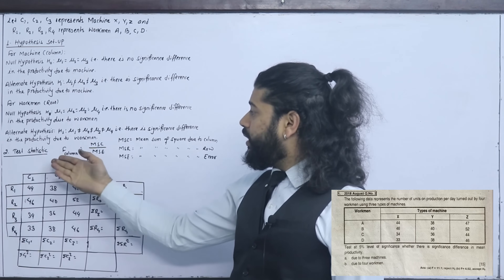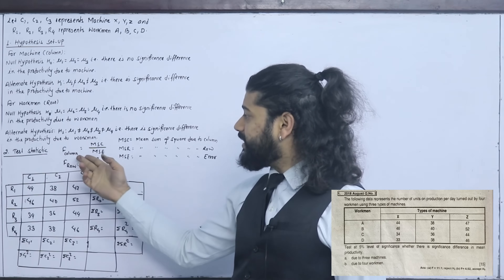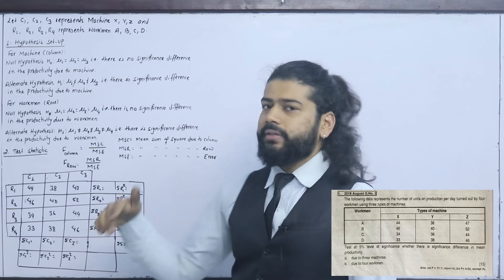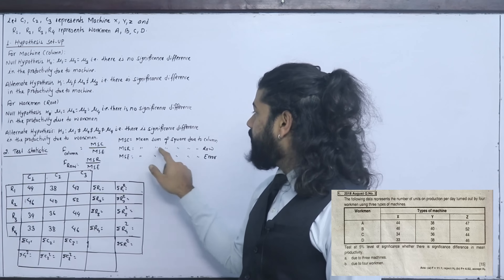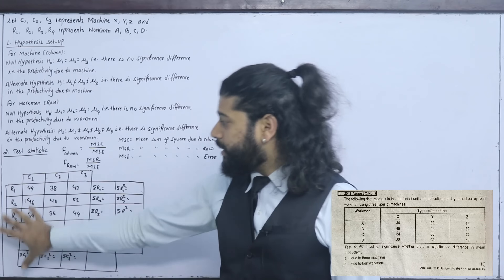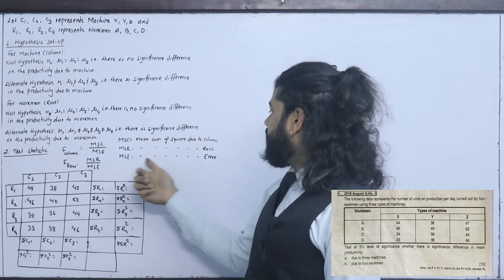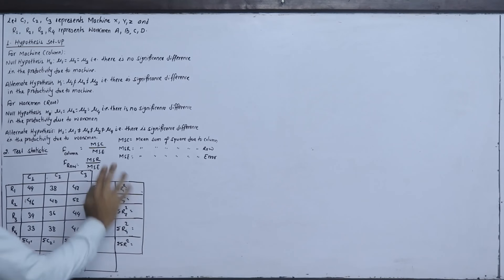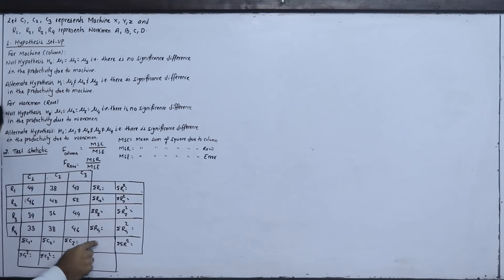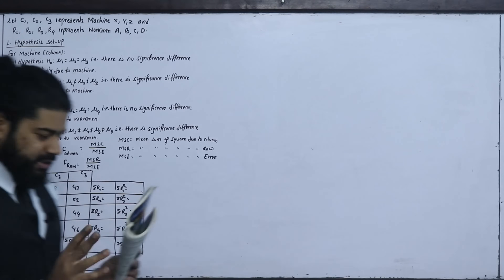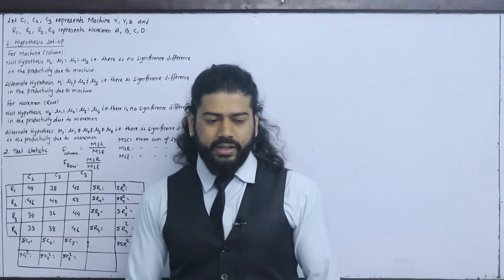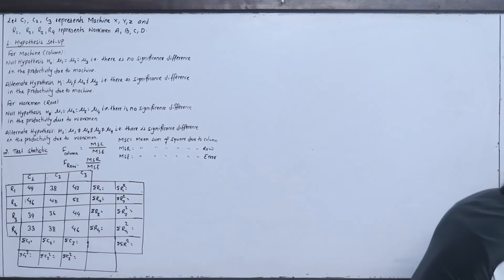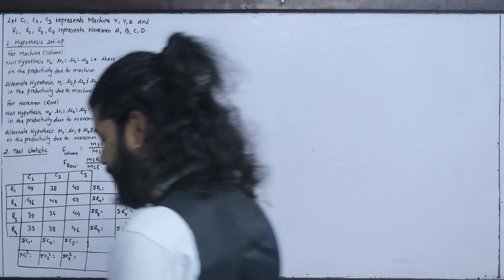Now in test statistics, we will set up the calculated column. MSC means mean sum of squares due to column, or between column, or between machine. MSR means mean sum of squares due to row, due to workmen. MSE means mean sum of squares due to error.